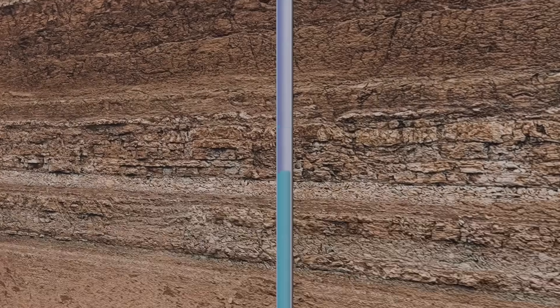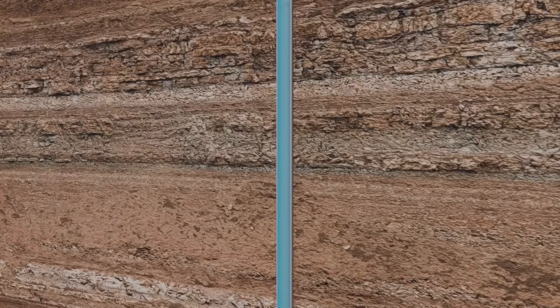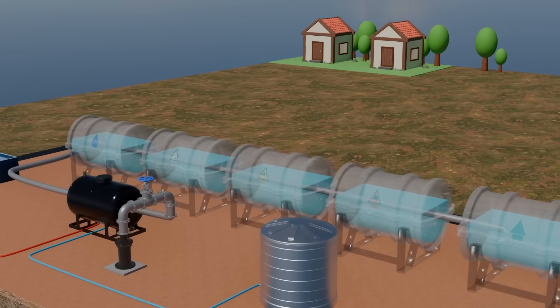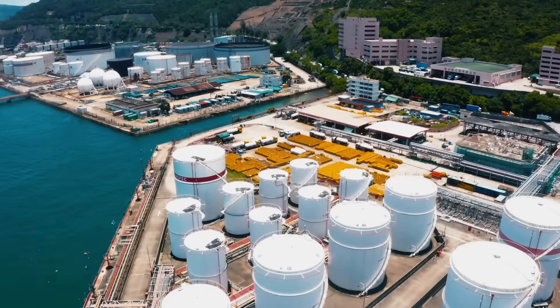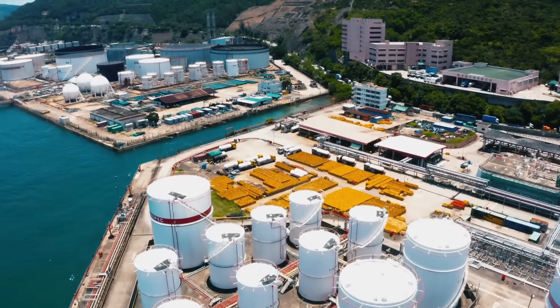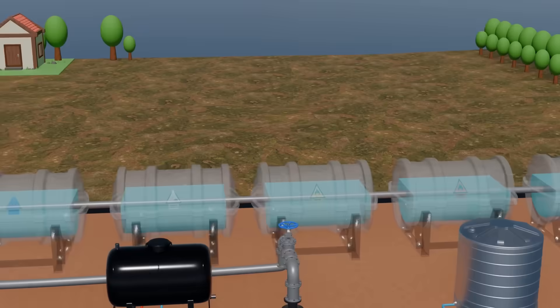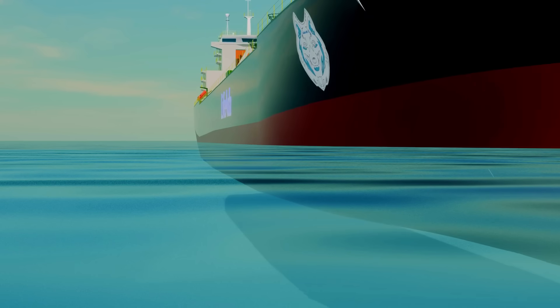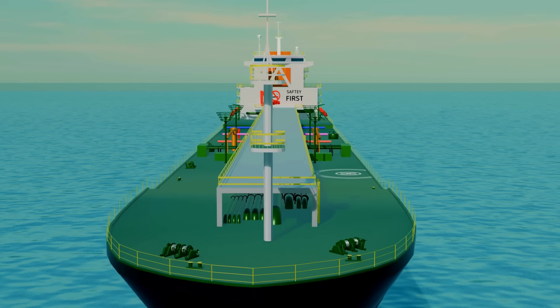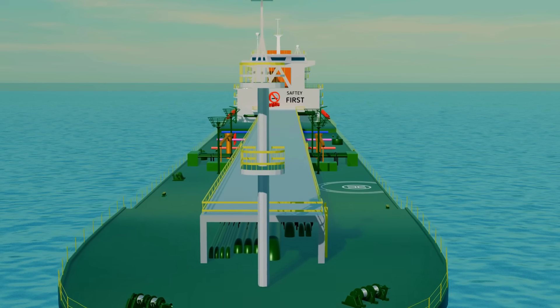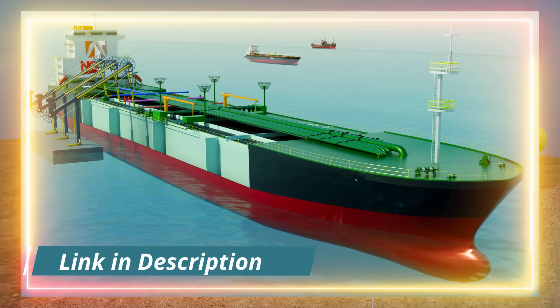The oil that comes out is called crude oil. Alongside oil, natural gas is also released and collected. From here, the crude oil is transported to refineries for further processing. Large oil tankers are used for this purpose to carry the oil safely to refineries. The detailed process of how oil tankers transport crude oil to refineries is covered in another video.